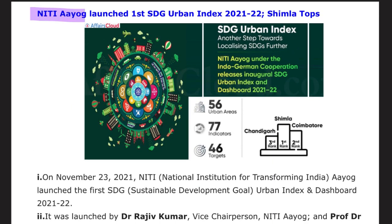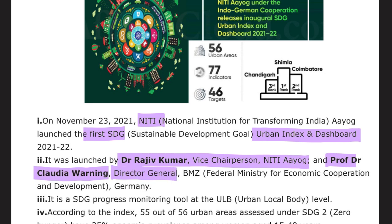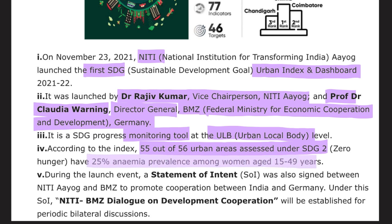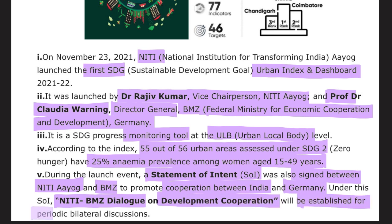NITI Aayog launched India's first Sustainable Development Goal (SDG) Urban Index for 2021-22, in which Shimla topped. It was launched by Dr. Rajiv Kumar, Vice Chairman of NITI Aayog, and Professor Dr. Claudia Warnig, Director General of BMZ (Federal Ministry for Economic Cooperation and Development of Germany). It is an SDG progress monitoring tool at the Urban Local Body (ULB) level. According to the index, 55 out of 56 urban areas assessed under SDG 2 (Zero Hunger) have 25% anemia prevalence among women aged 15 to 49 years. A statement of intent was also signed between NITI Aayog and BMZ to promote India-Germany cooperation.